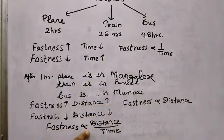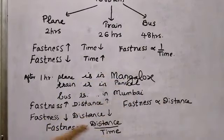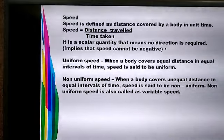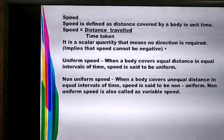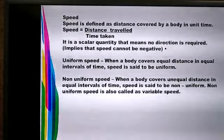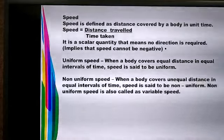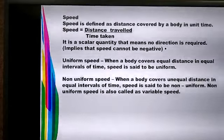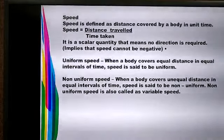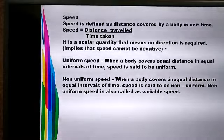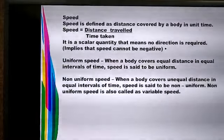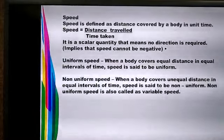Fastness is directly proportional to distance but inversely proportional to time. The measure of fastness or slowness of motion is called speed. Speed is defined as the distance covered by a body in unit time. The formula of speed is: speed equals distance travelled divided by time taken. Since both distance and time are scalar quantities, speed is also a scalar quantity — it requires only magnitude and no direction. Since speed is the distance covered, speed can never be negative.